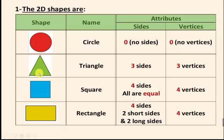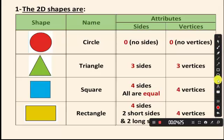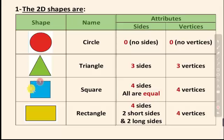Next, the triangle. A triangle has three sides — one, two, three — and three vertices, because the number of sides and vertices is always the same.